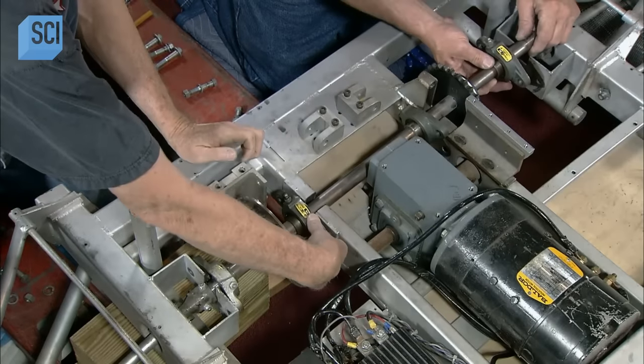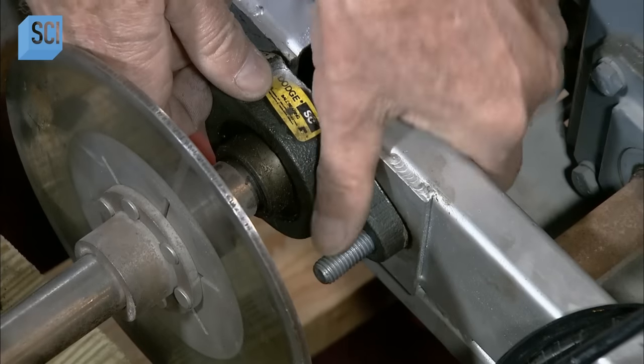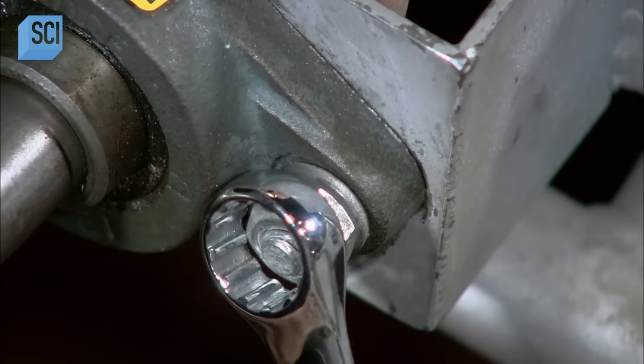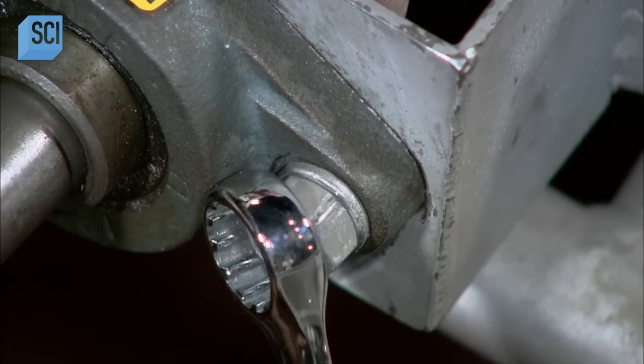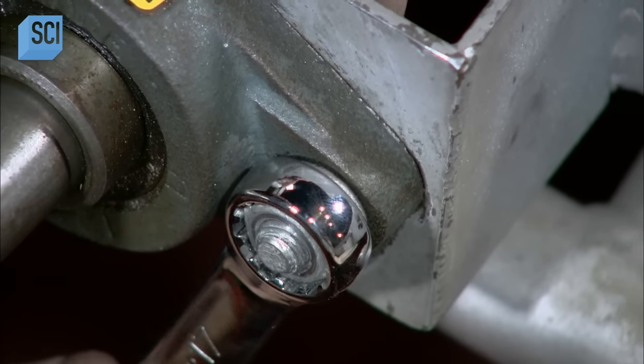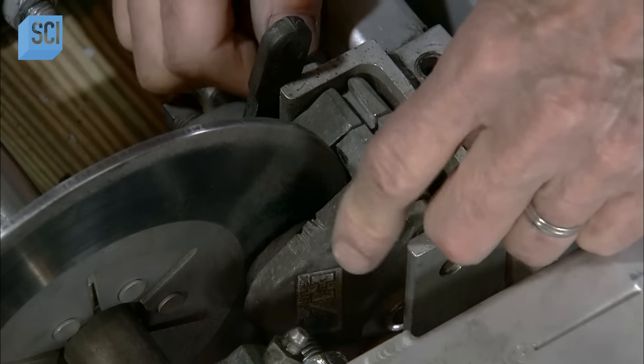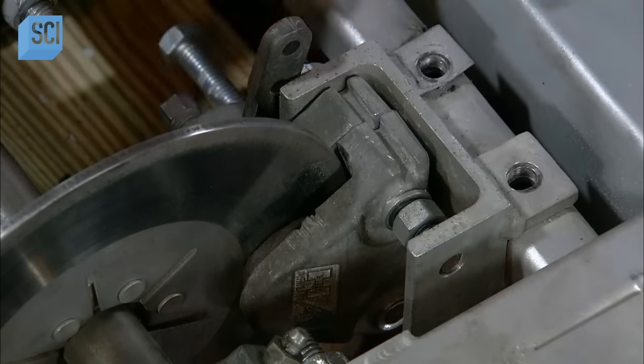He attaches it to the main drive shaft and lowers the assembly into the vehicle. He bolts the disc to the chassis, where it will serve as a friction surface for the brake pads, which he installs next.